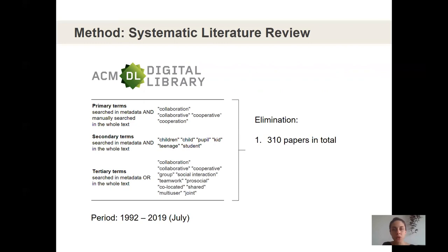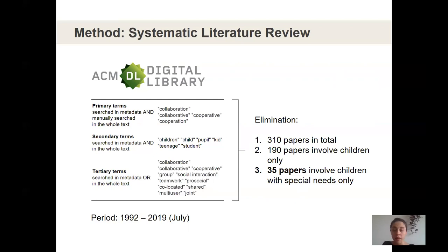This first research query resulted in 310 papers. Then, as a second step, we eliminated papers that do not directly involve children — for instance, if the students are university students, or if the technology was not directly developed or designed for children's collaborative use. This elimination resulted in 190 papers focusing on children in general.